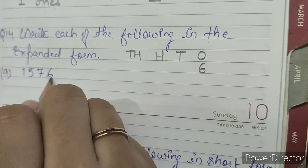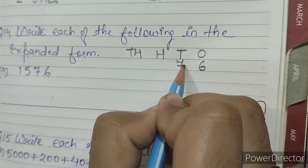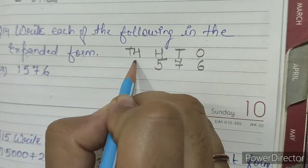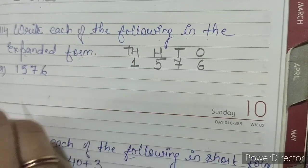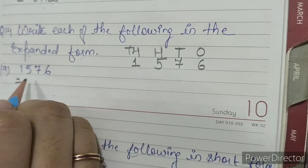Place value of 6 is ones, place value of 7 is tens, place value of 5 is hundreds, and place value of 1 is thousands. Now I will show you how to write an expanded form.